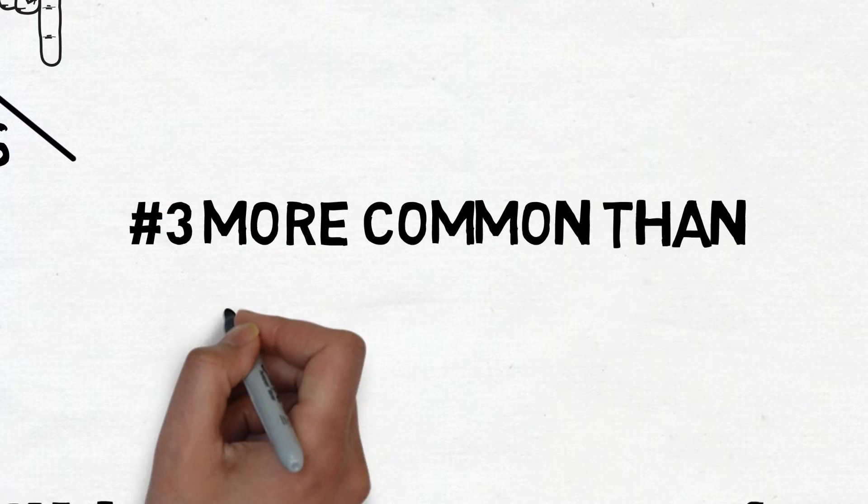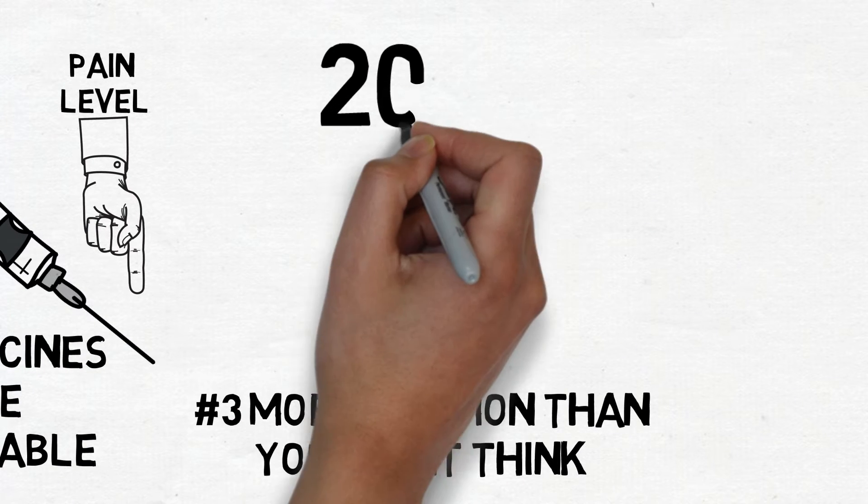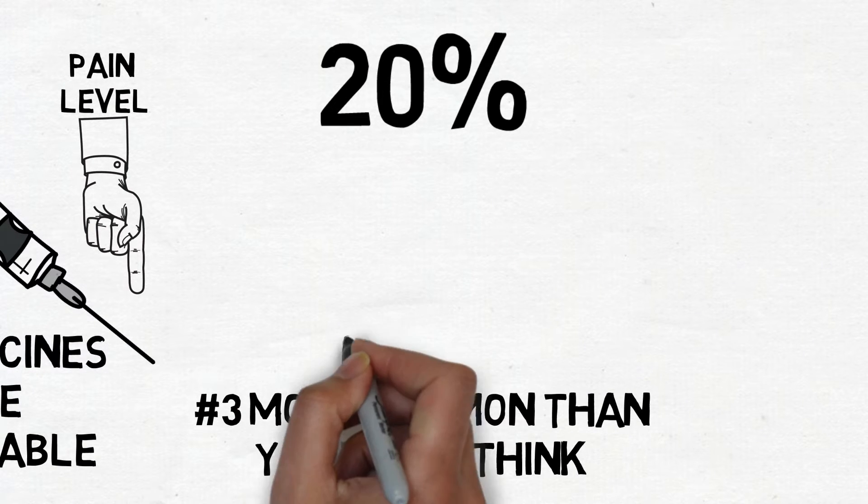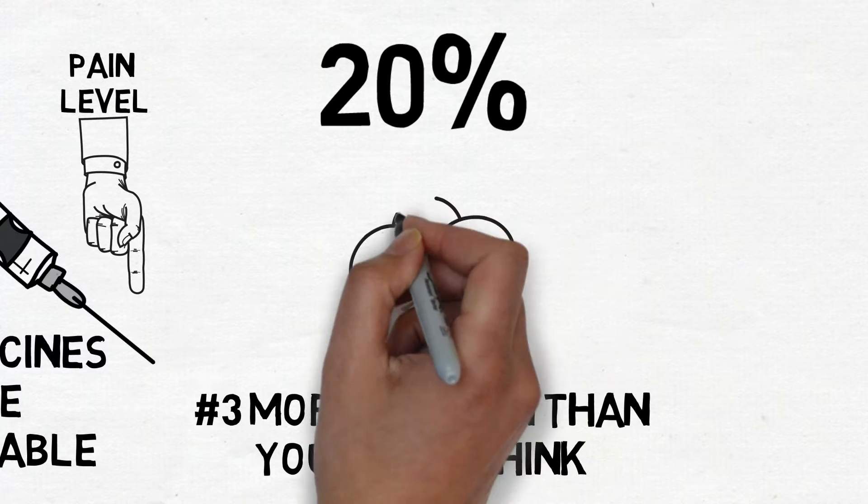Number three: Shingles is more common than you might think. About 20% of Americans will contract shingles at some point in their life. That's a staggering 1 in 5.